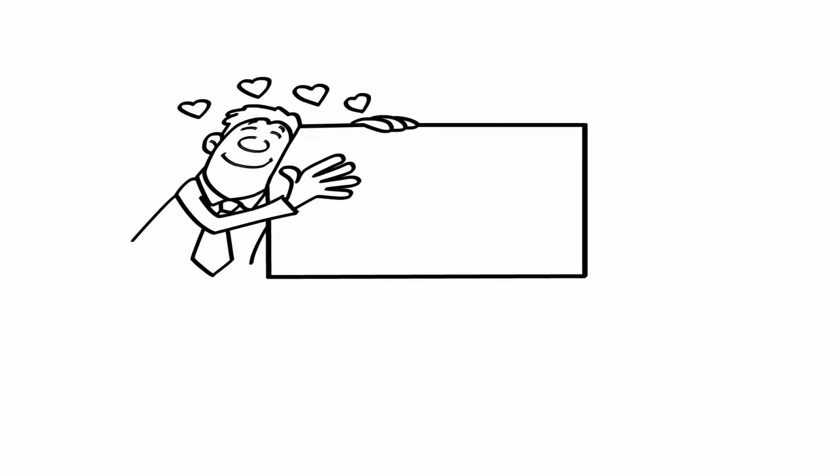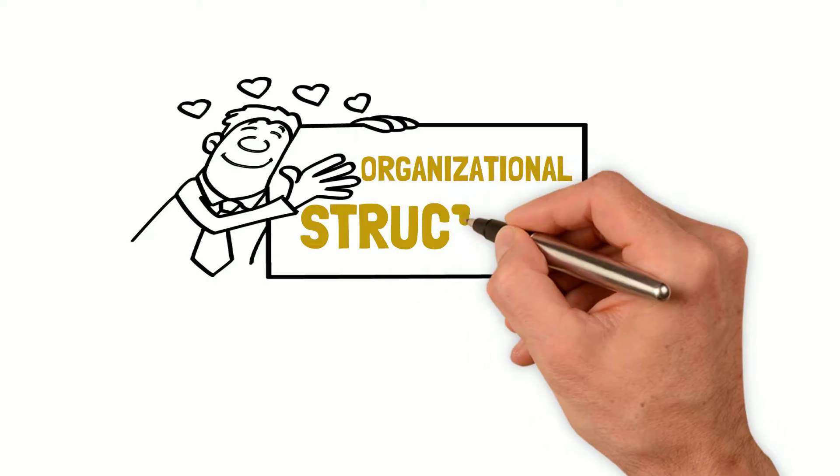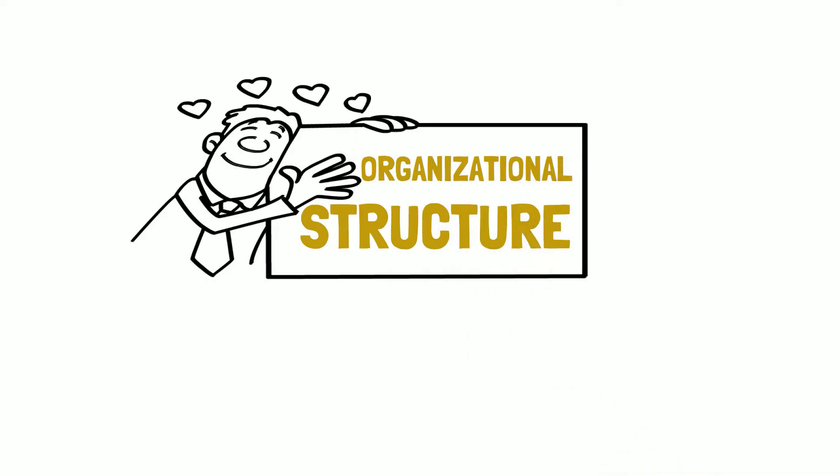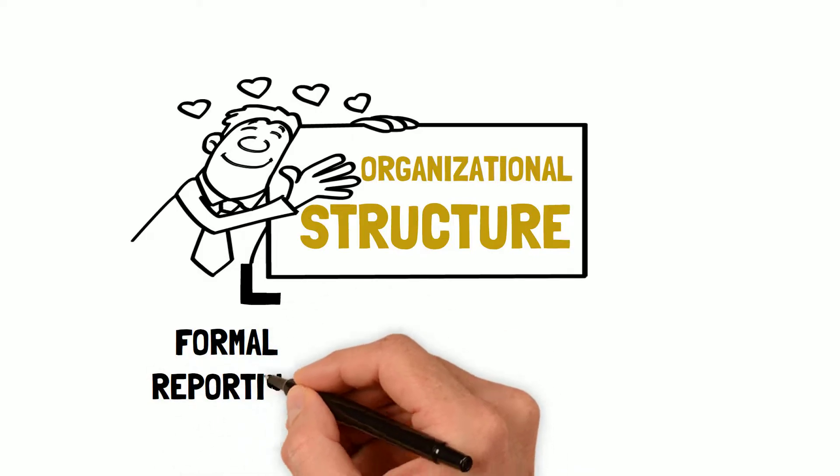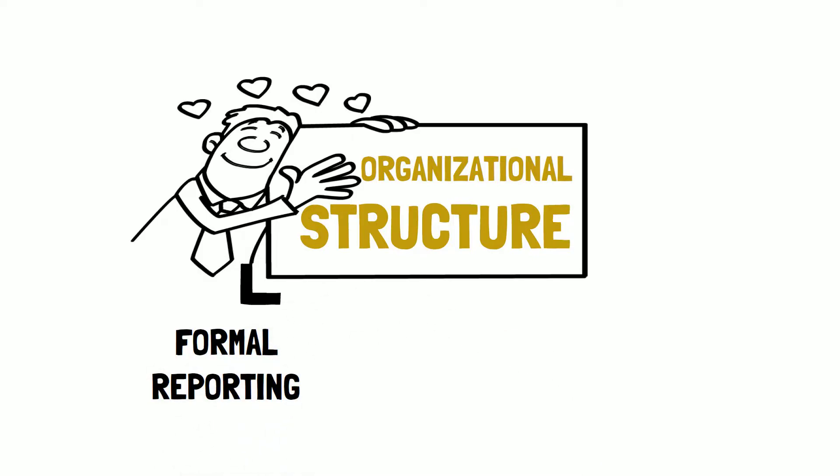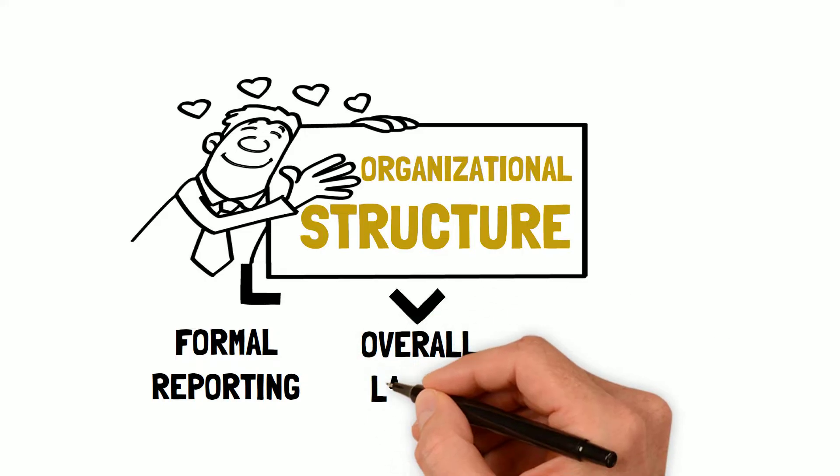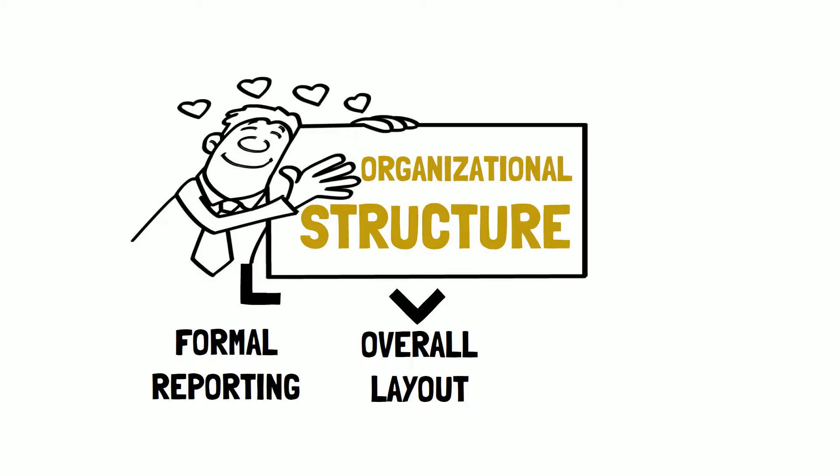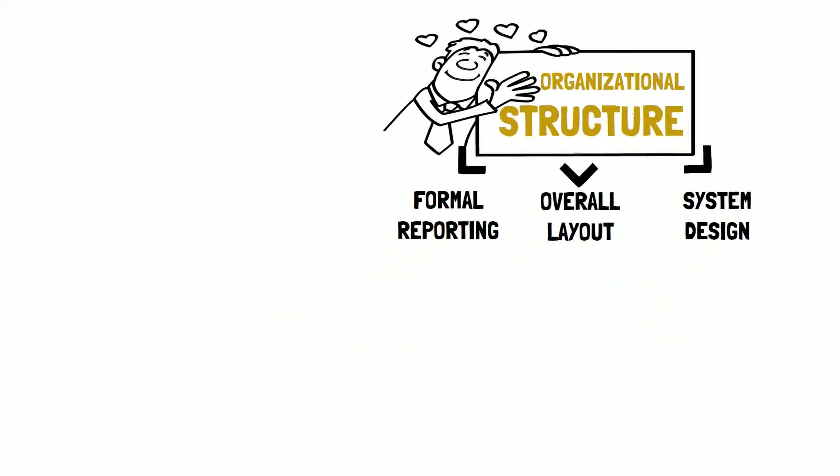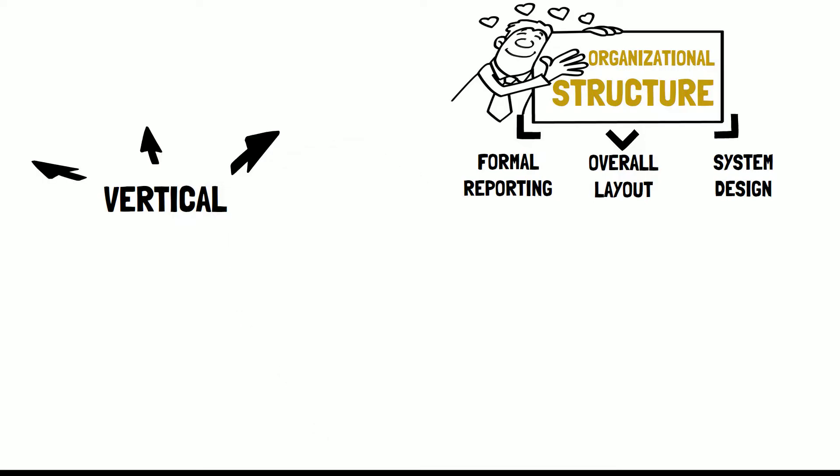The definition of organization structure includes three main components. Firstly, formal reporting relationship, hierarchy and level of control. Secondly, the overall layout of a company is that it is divided into separate groups of people or as departments, which are all put together forming the greater organization as a whole. Thirdly, as well as the design of system that allows for effective communication and coordination across departments. There are a few varieties between the vertical and horizontal perspective regards how the communication and information processing is dealt with in different organizations and depending on its structure.